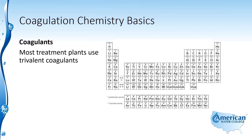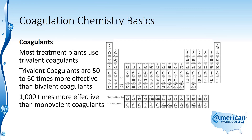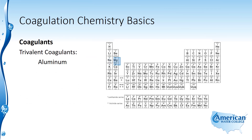Most treatment plants use trivalent coagulants because trivalent coagulants are 50 to 60 times more effective than bivalent coagulants. Trivalent coagulants have three positive charges associated with them, a bivalent coagulant only has two positive charges, and a monovalent coagulant only has one positive charge. Trivalent coagulants are a thousand times more effective than monovalent coagulants. Aluminum is a trivalent coagulant.